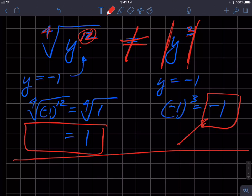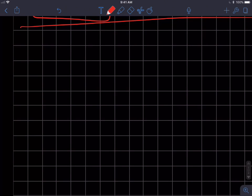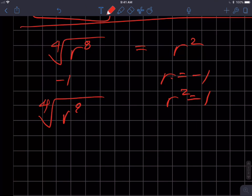Why not on the other guy, r to the eighth? Well, my original expression was the fourth root of r to the eighth, and we're claiming that r squared is equivalent. If I put a negative one in for r over here, I will get r squared equals one. If I put a negative one in here, I also get the fourth root of r to the eighth. Negative one to the eighth equals the fourth root of one.